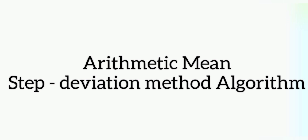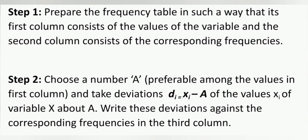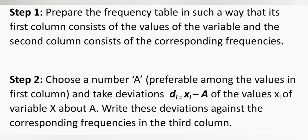Step 1: Prepare the frequency table such that its first column consists of the values of the variable and the second column consists of the corresponding frequencies. Step 2: Choose a number 'a', preferable among the values in the first column, and take deviations di equal to xi minus a of the values xi of variable x about a. Write these deviations against the corresponding frequencies in the third column.